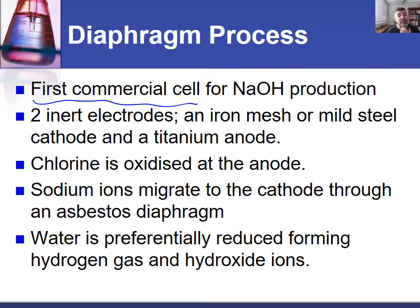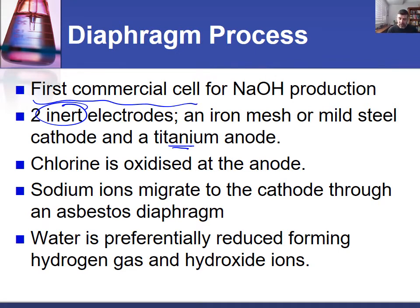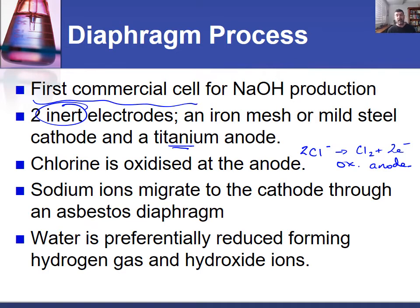The diaphragm cell was the first commercial cell — the first one actually used on large scale for sodium hydroxide production. Both electrodes were inert; this time we weren't trying to form an amalgam, so no mercury. We had iron mesh or steel as the cathode and a titanium anode as before. Neither of these participated in the reaction. The sodium ions were migrating to the cathode through an asbestos diaphragm — and you can already start to see one reason why this process also had to be improved.